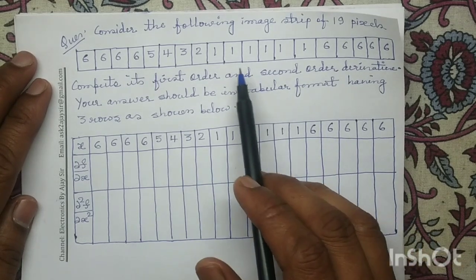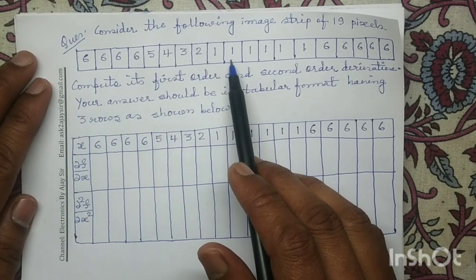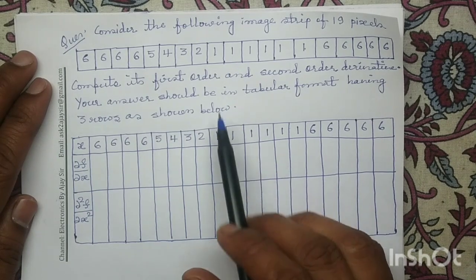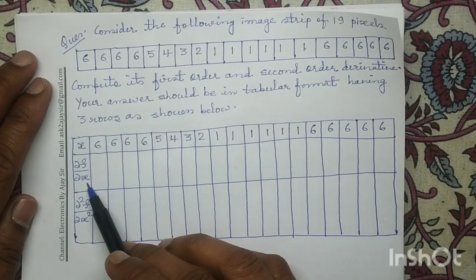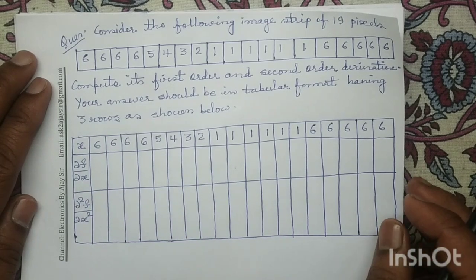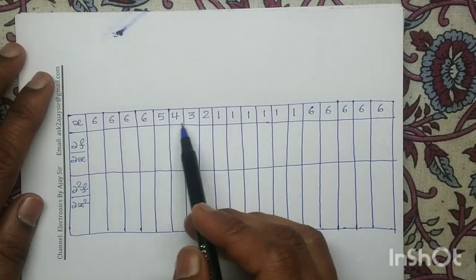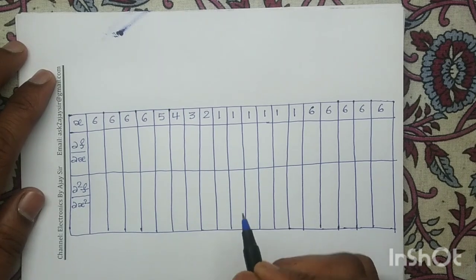In this question, a one-dimensional input image strip is given to us. For this given input image strip, we have to determine and compute its first order derivative and its second order derivative.